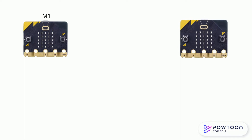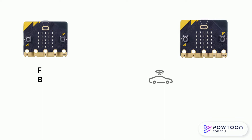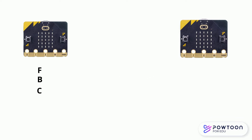Prepare two micro:bits M1 and M2. Selection F for the car to move forward for one second. Selection B for the car to move backward for one second. C to clear the array. N to clear the screen.